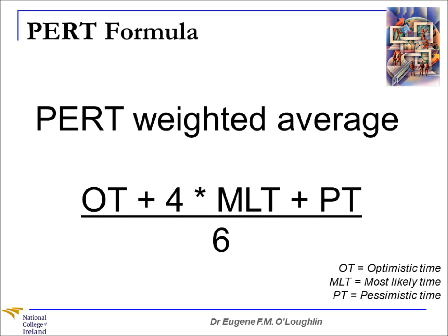In order to do this, we need to calculate what's called the PERT weighted average. This is the figure that takes into account the most optimistic time, the most likely time, and the pessimistic time in a formula. So: OT for optimistic time, plus four times the most likely time, plus the pessimistic time, and divide that all by six.